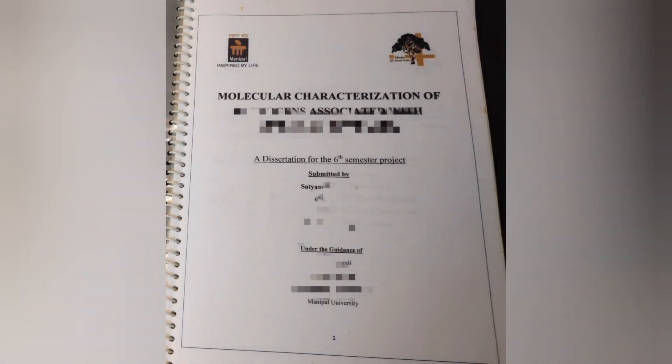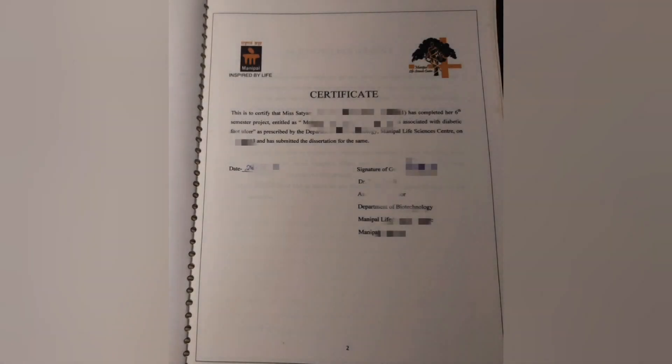To help you all, I have taken out my thesis from my graduation days. It is on the topic of diabetic foot ulcer. Let me tell you step by step how to proceed with thesis writing. This is the first page of the thesis — on the top-left corner is the university logo, top-right is the college logo, followed by the heading of the thesis, the student's name, roll number, university, and the name and designation of the guide.